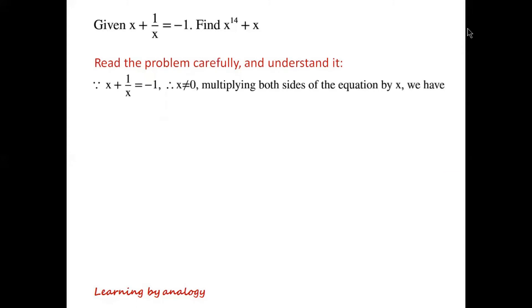Because x plus 1 over x equals minus 1, x doesn't equal 0. Multiplying both sides of the equation by x, we have x squared plus x plus 1 equals 0.